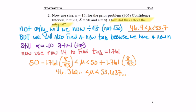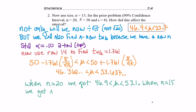The question was: how did this affect the interval? When n equaled 20, we got 46.9 to 53.1. When n equaled 15, we got 46.4 to 53.7 - a slightly larger confidence interval.